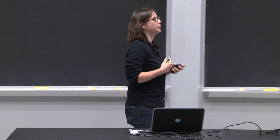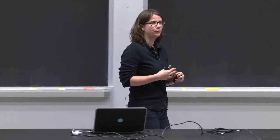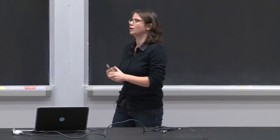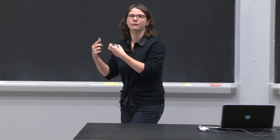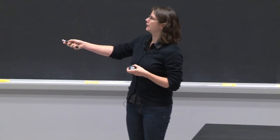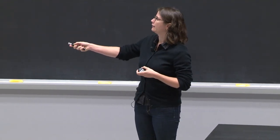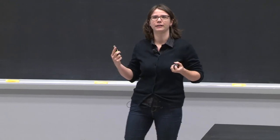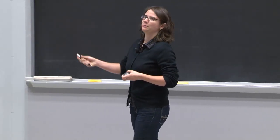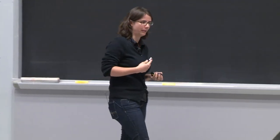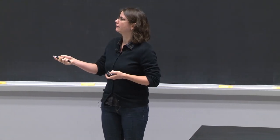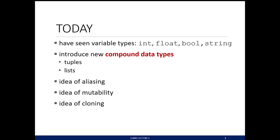Today, we're going to introduce two new data types. They're called compound data types because they're actually data types made up of other data types — particularly ints, floats, booleans, strings, and other data types as well. That's why they're called compound data types. We're going to look at a new data type called a tuple and a new data type called a list.